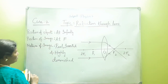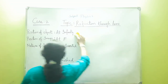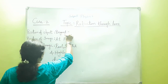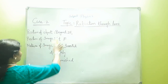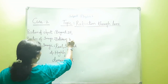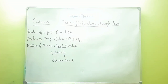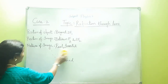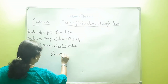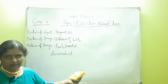Let us move on to case 2. In case 2, the position of the object is beyond 2F1. The image will be formed between F2 and 2F2, and the nature of the image would be real, inverted and diminished.